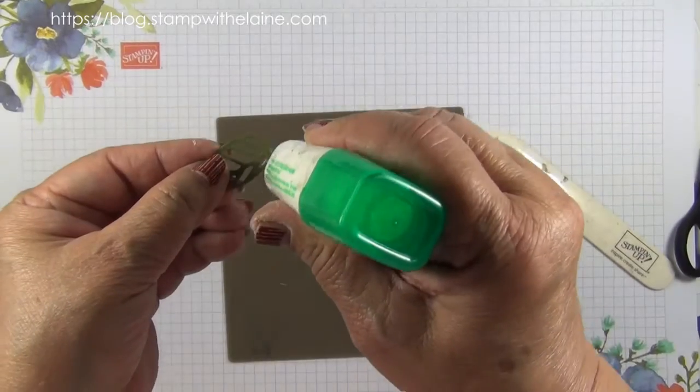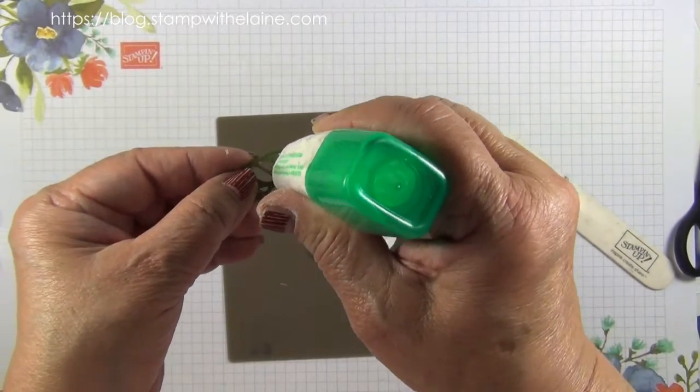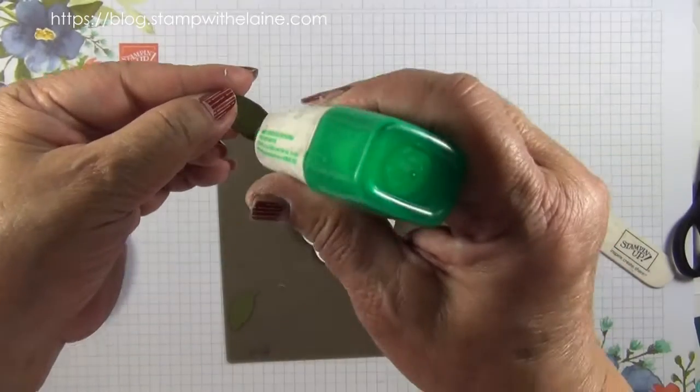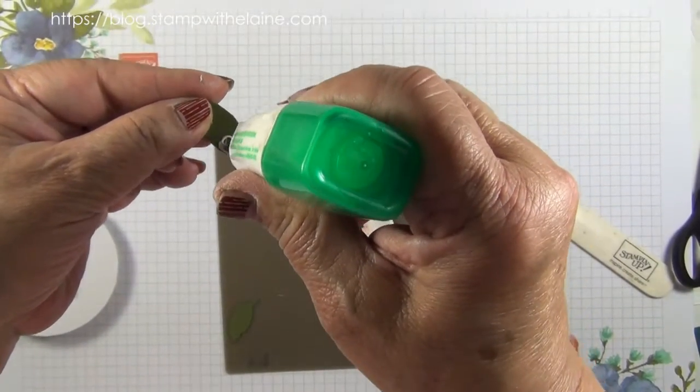Pop a bit of glue on the top of your leaf, get it to the underside of the petal, and do the same with these smaller solid leaves.